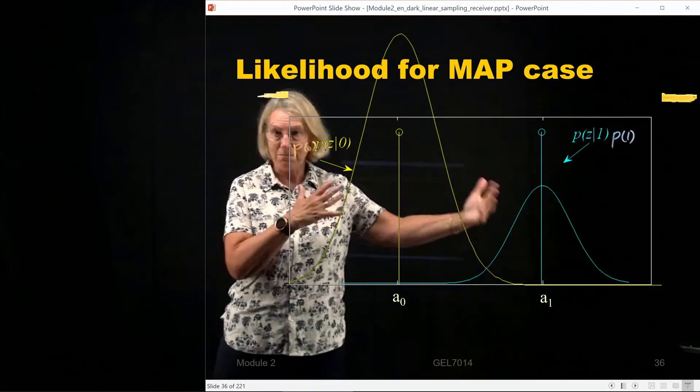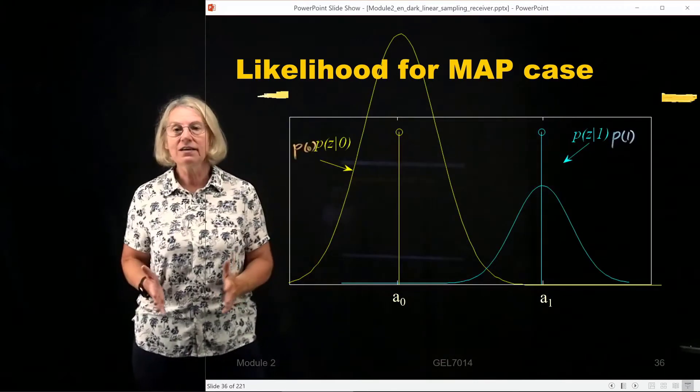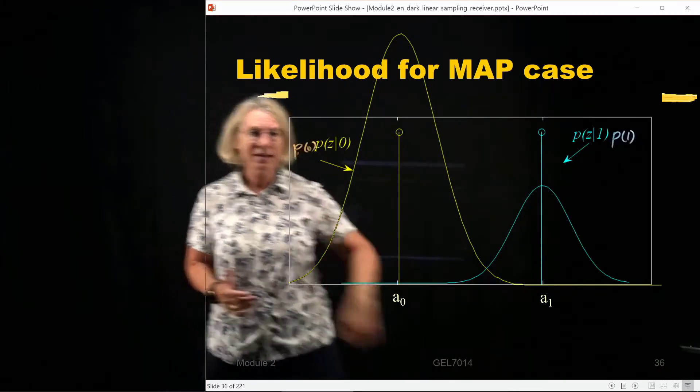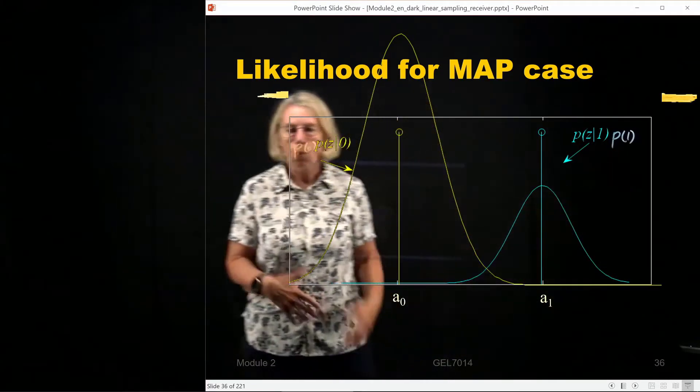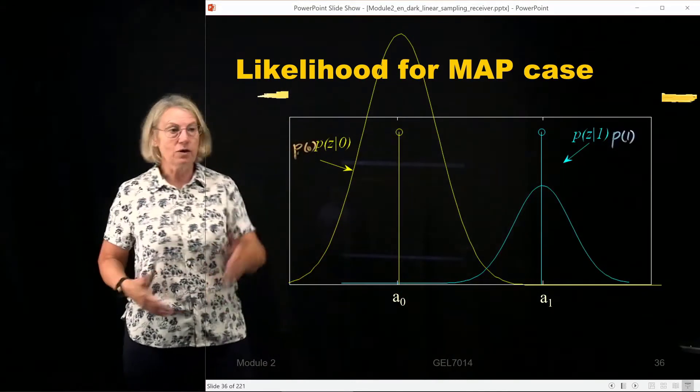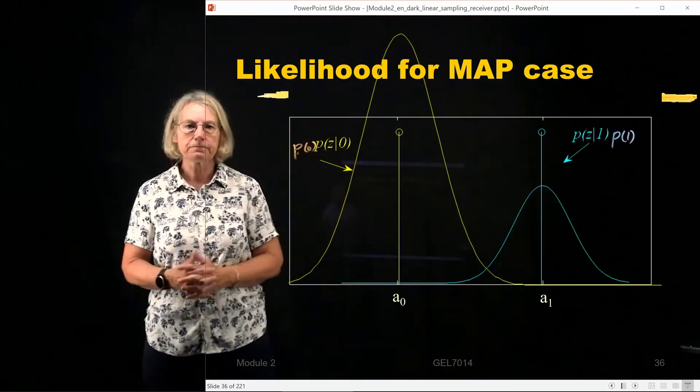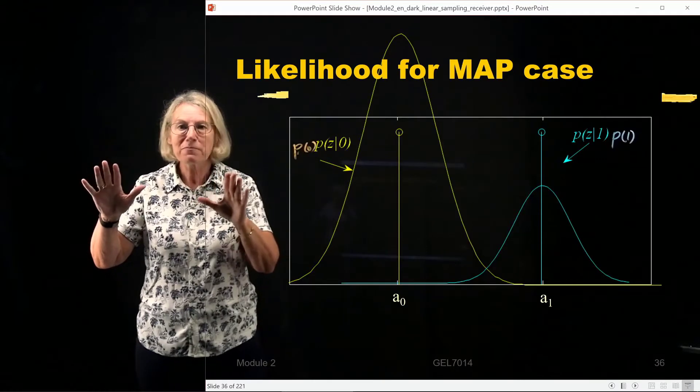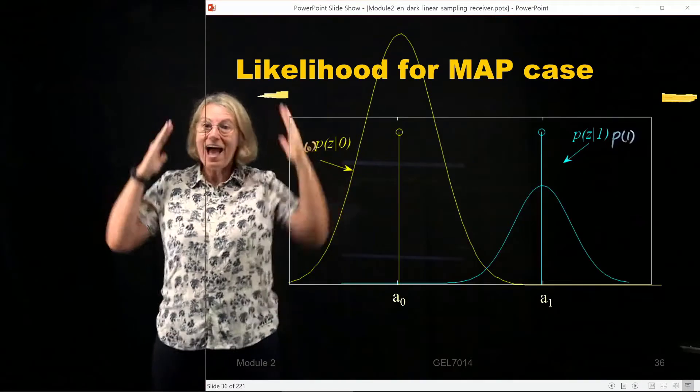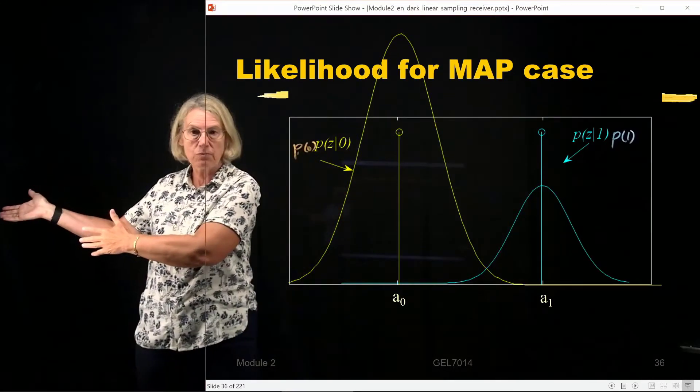They're no longer the same. I mean they're both Gaussian, but because of multiplying by this factor, one's going to be bigger than the other. One is more probable than the other. Of course if they were equal probability it would be multiply each one by a half and we'd be back in our situation for the maximum likelihood.